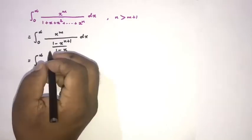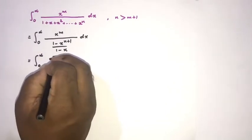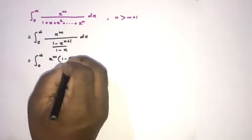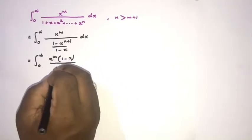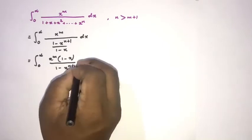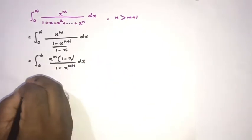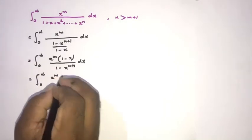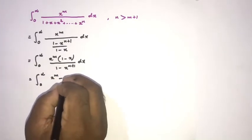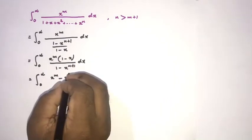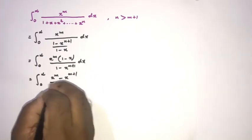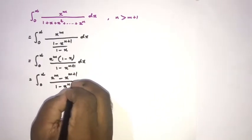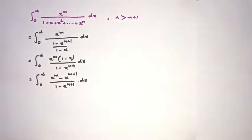Then we can simplify a little bit: the integral from 0 to infinity of x to the M times (1 minus x) over (1 minus x to the N+1) dx, which gives us the integral of (x to the M minus x to the M+1) over (1 minus x to the N+1) dx.